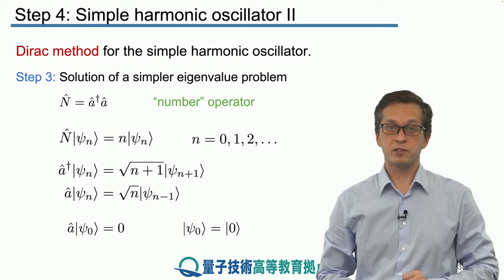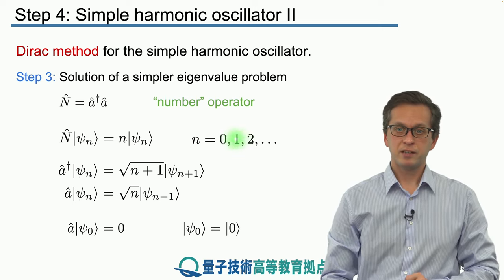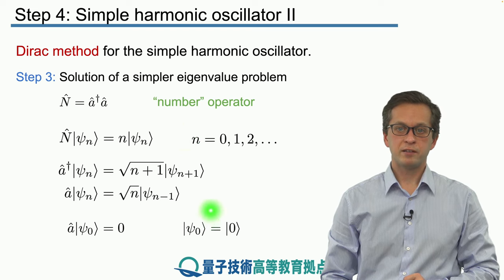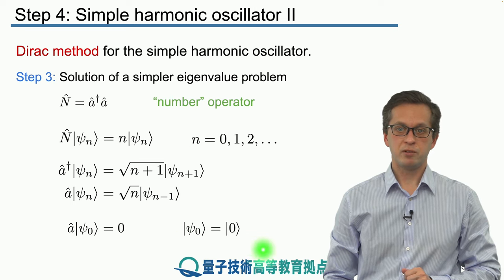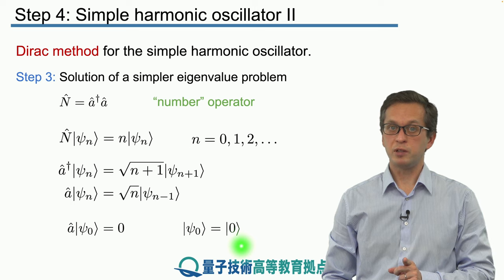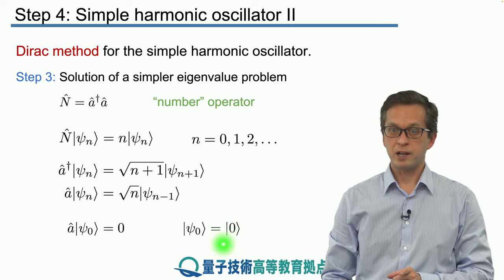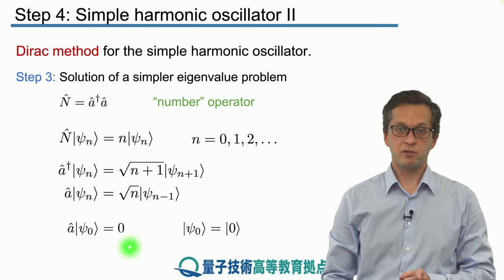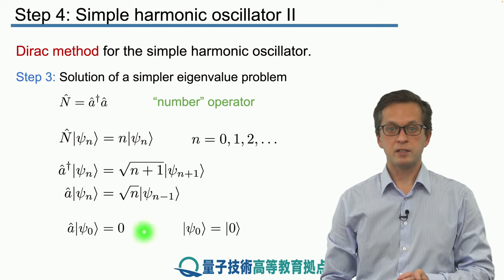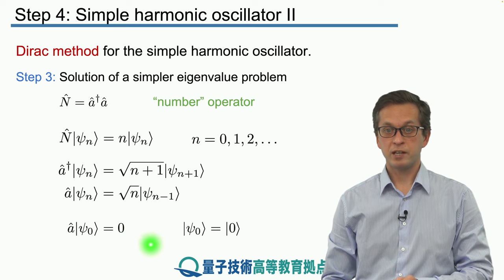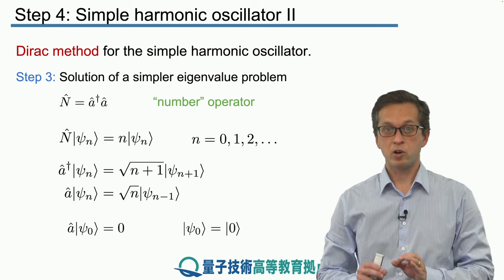Normally we don't write psi 0 for the lowest energy state — we just write ket 0. But I urge you to be cautious. There is a big difference between ket 0, which is a properly normalized vector, and the number 0. So A applied to ket 0 is equal to 0, but 0 and ket 0 are not the same thing.